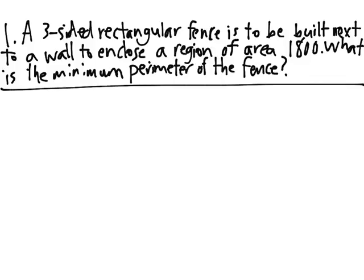Here are some examples of problems about optimization. Problem 1. A three-sided rectangular fence is to be built next to a wall to enclose a region of area 1800. What is the minimum perimeter of the fence?